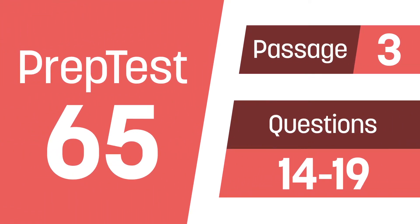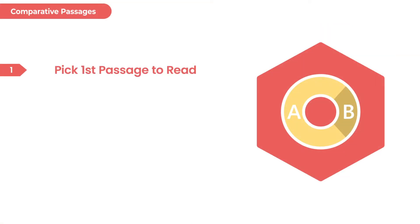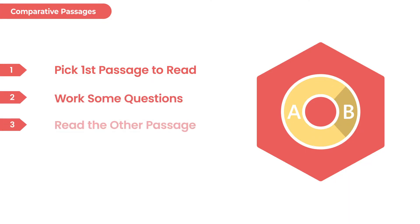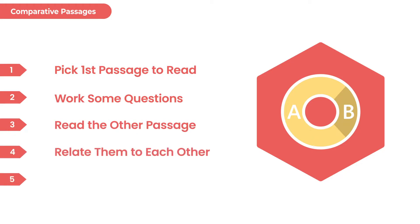Hey, this is Patrick. Let's dive into Test 65's comparative reading passage about blackmail. We're going to try a methodology here where we read one passage and then go work on some questions — having only read that first passage — then read the other one, relate them to each other, and finish off the questions.